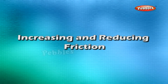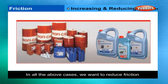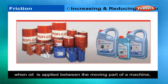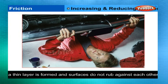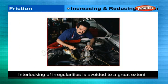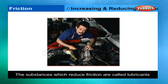Increasing and reducing friction. A bicycle and motor mechanic uses grease between the moving parts of machines. We want to reduce friction in order to increase efficiency. When oil, grease, or graphite is applied between the moving parts of a machine, a thin layer is formed and moving surfaces do not directly rub against each other. Interlocking of irregularities is avoided to a great extent, and movement becomes smooth. The substances which reduce friction are called lubricants.